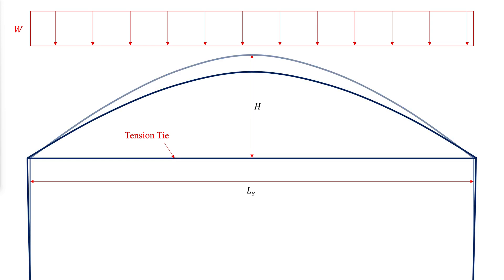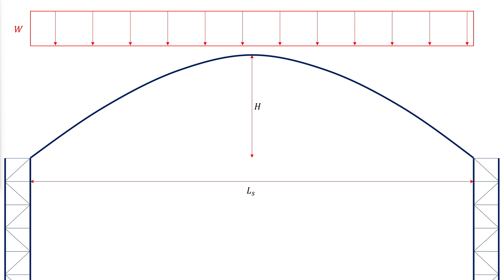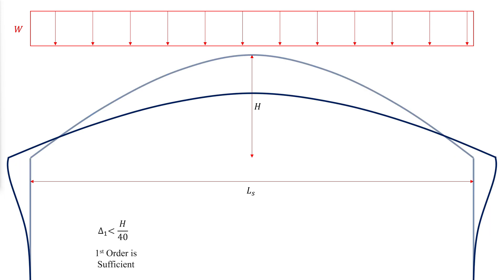However, these ties often interfere with the functionality and aesthetic quality of the structure. In this figure, a vertical thrust system designed to resist the horizontal thrust is shown.